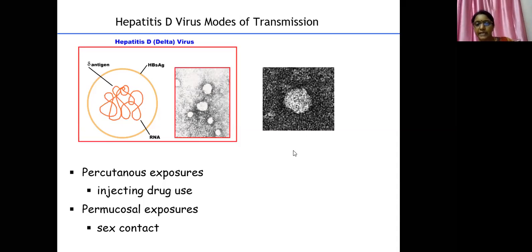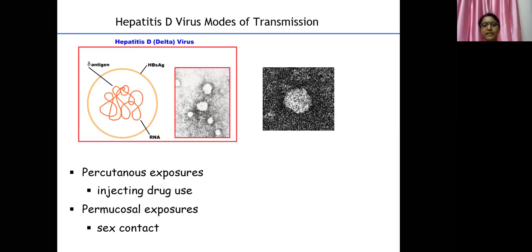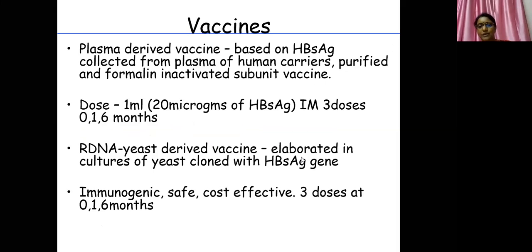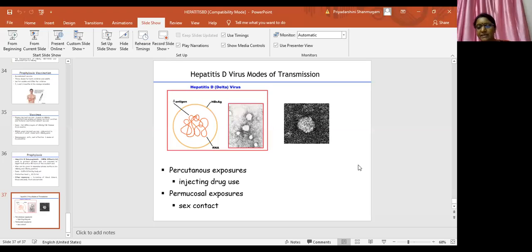Because hepatitis D depends on hepatitis B virus, if you are immune to HBV, you are also protected against hepatitis D. This is the only virus vaccine that gives protection against two viral infections. Another key point: the hepatitis B vaccine is an example of a vaccine that protects against cancer — since HBV leads to hepatocellular carcinoma. Another vaccine-preventable cancer is cervical carcinoma, prevented by the human papillomavirus (HPV) vaccine.